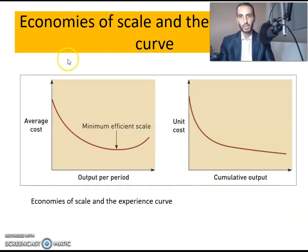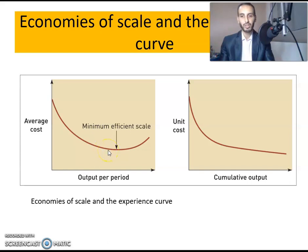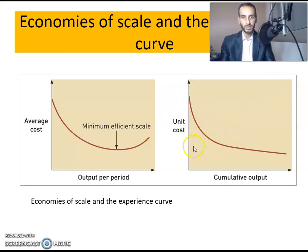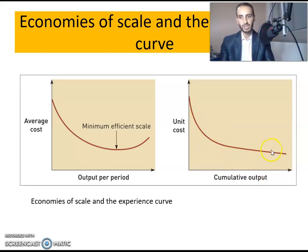We also have economies of scale and the experience curve. Companies at the beginning have higher average costs, and with time, as output size increases, they gain economies of scale and efficiency. However, if they keep growing output, average costs may eventually increase again due to hurdles like bureaucracy. The experience curve shows that at the beginning unit cost is high, but with cumulative output, unit costs decrease as output increases. That's all for this video — thank you for watching.